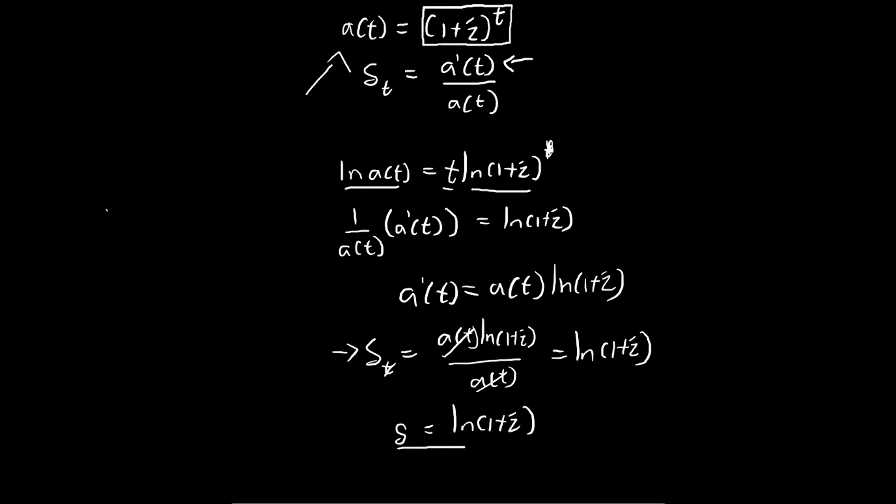So we see that for compound interest, the force of interest is always a constant. Some people rearrange this formula as 1 plus i is equal to e to the power of delta t. Now these two formulas are the same.